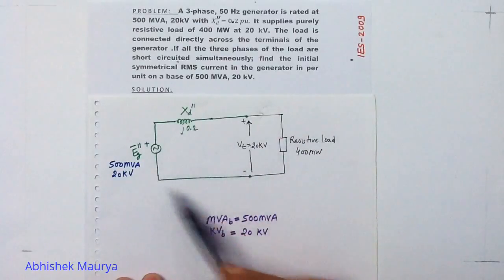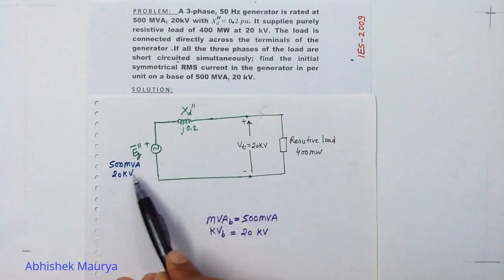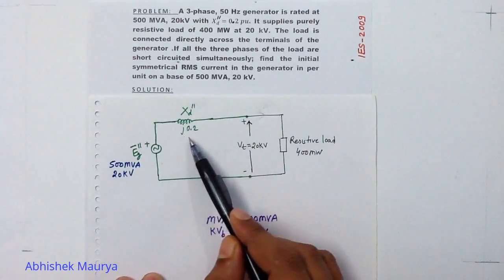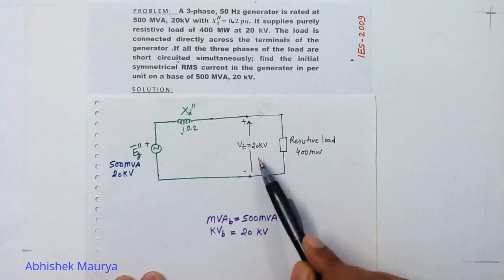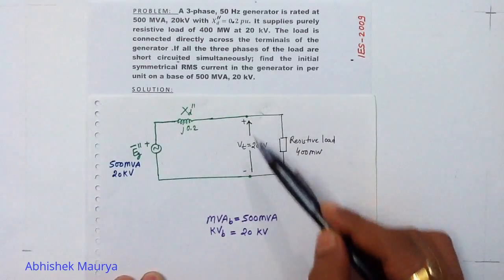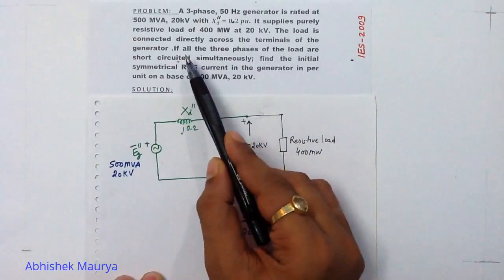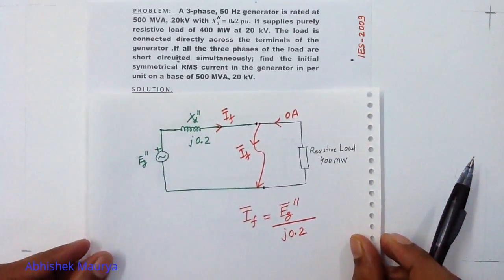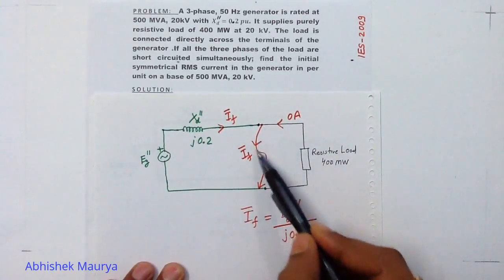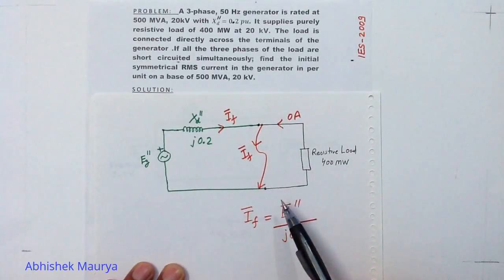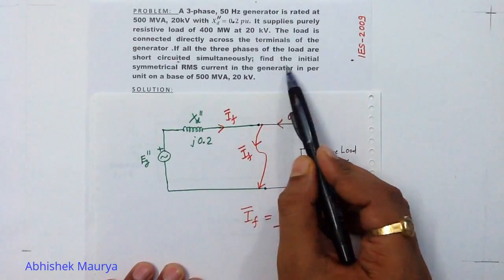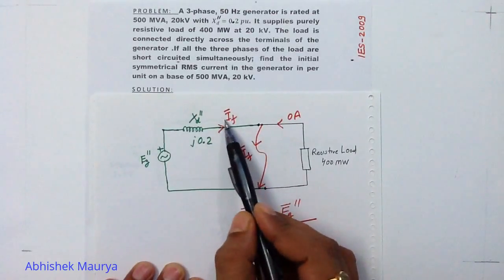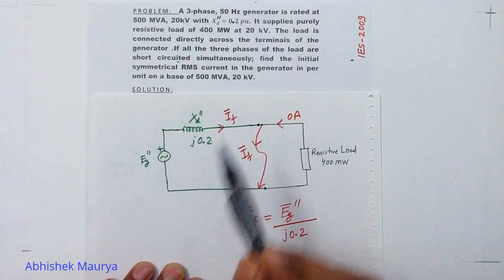After reading this question you can make this circuit diagram. In this circuit diagram there is a generator operating at 500 MVA, 20 kV. The sub-transient reactance of the generator is J0.2. There is a resistive load of 400 megawatt operating at 20 kV connected across the terminals of the generator. If all three phases of the load are short-circuited simultaneously, we have to find out the initial symmetrical RMS current in the generator in per unit on a base of 500 MVA, 20 kV.